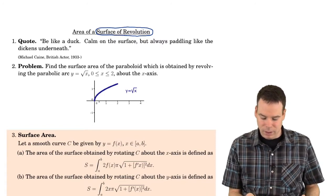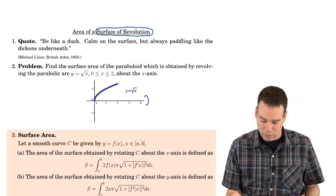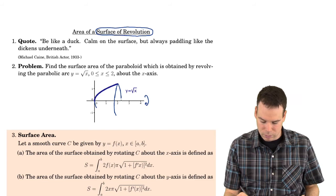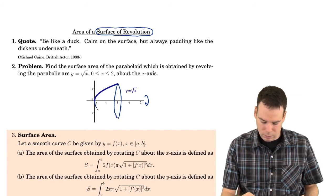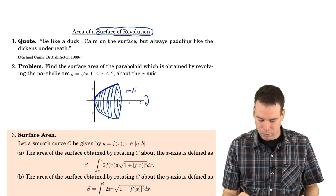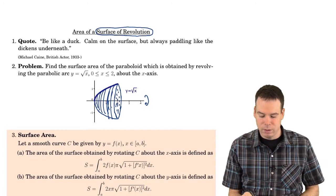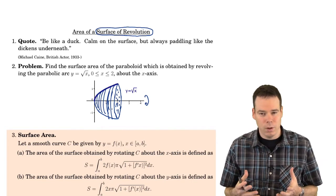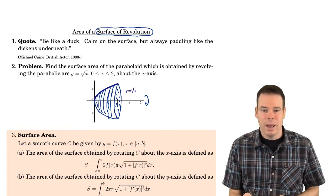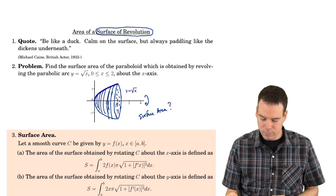As a quick example, let's look at the curve y equals square root of x. Imagine we revolve it around the x-axis — what that does is trace out a surface. Our focus is on what is the area of that surface. What is our surface area? That's our question.